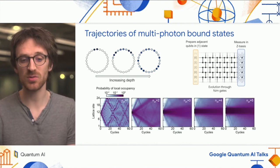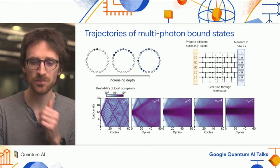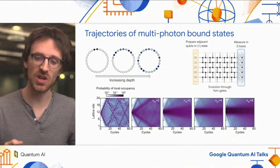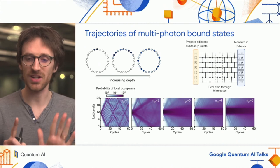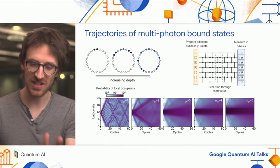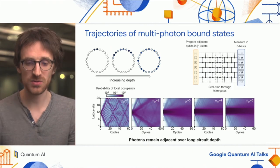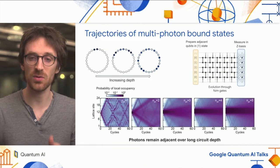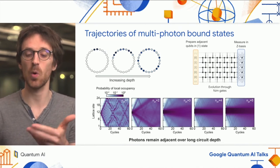We have done this for several numbers of adjacent excitations, up to five photons close to each other. Each time we see that when we prepare five adjacent sites, for instance, they remain five adjacent sites through the evolution—showing that the photons remain adjacent over long circuit depth, meaning we observe bound states.